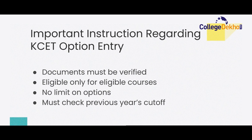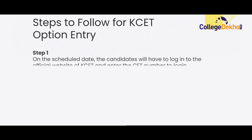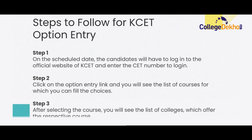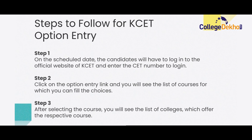Now let us look at the step-by-step process you will have to follow in order to fill your option entry form for KSET. Step one is to visit the official website of KSET where you will have to enter your CET number in order to log into the portal. For step two, you will have to click on the option entry link that will be provided on the main page of the website, and once you click on the link you will see the list of courses for which you are eligible and for which you can fill the choices. For step three, after selecting the preferred course, you will see the list of colleges that provide those courses and you will have to select a specific college as your preference.